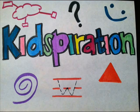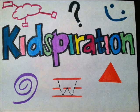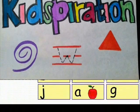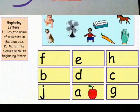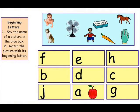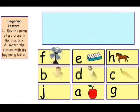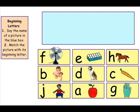Kidspiration also includes audio and visual, as well as organizational images that are connected to text to help children learn better, as well as storyboard features. Kidspiration allows children to connect words, numbers, and photos together, forming connections.